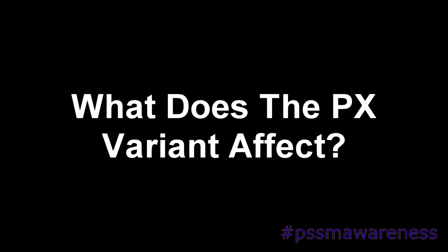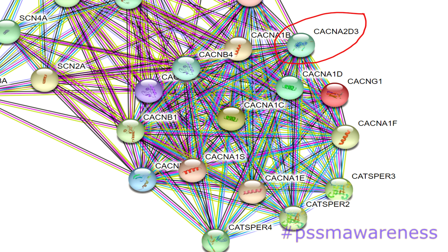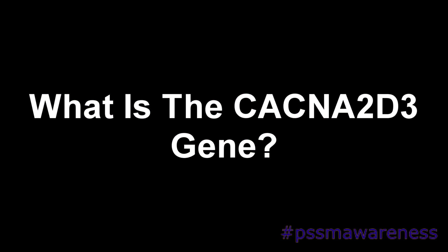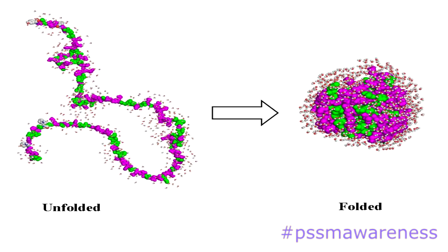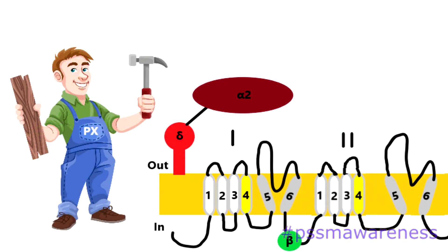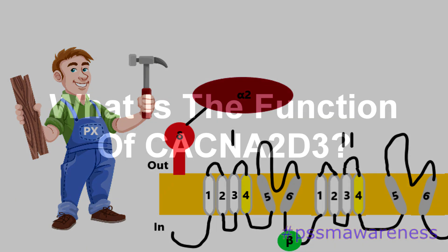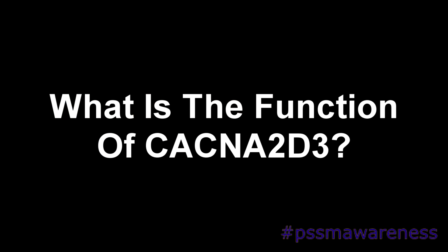What does the PX variant affect? The PX variant affects something called the CACNA2D3 gene. The CACNA2D3 gene is a protein that assists in the folding and unfolding of large molecular structures like protein. It also assists in the assembly of the voltage-gated calcium channel.